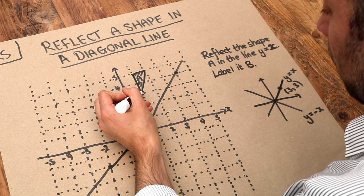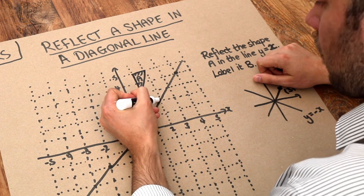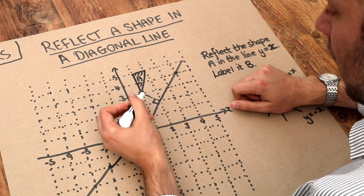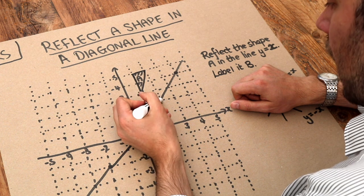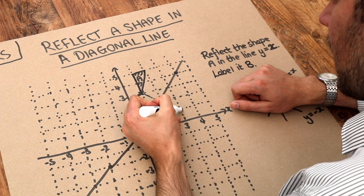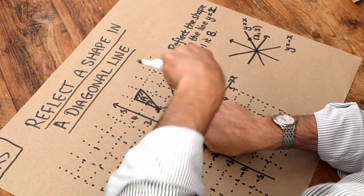We always go from this point directly towards the line of reflection, so at right angles like this. And then once you get to it you count how many squares you've gone. So you've gone one square diagonally and then once you've got here you do the same. So we go one square diagonally and we'll end up here. So this point reflects in this line to that point there.